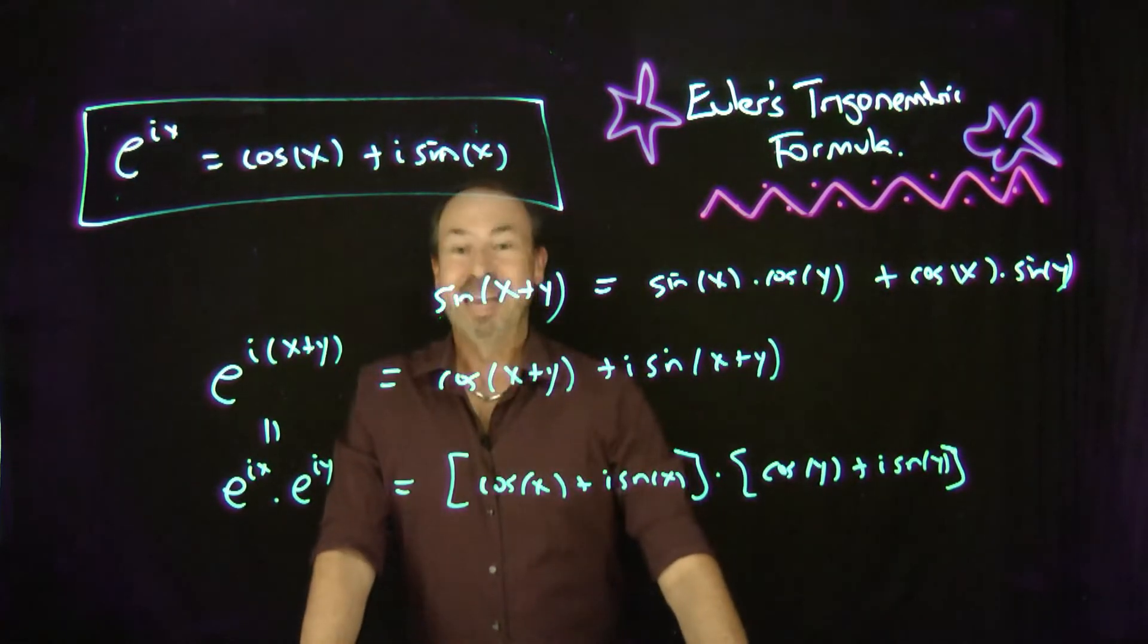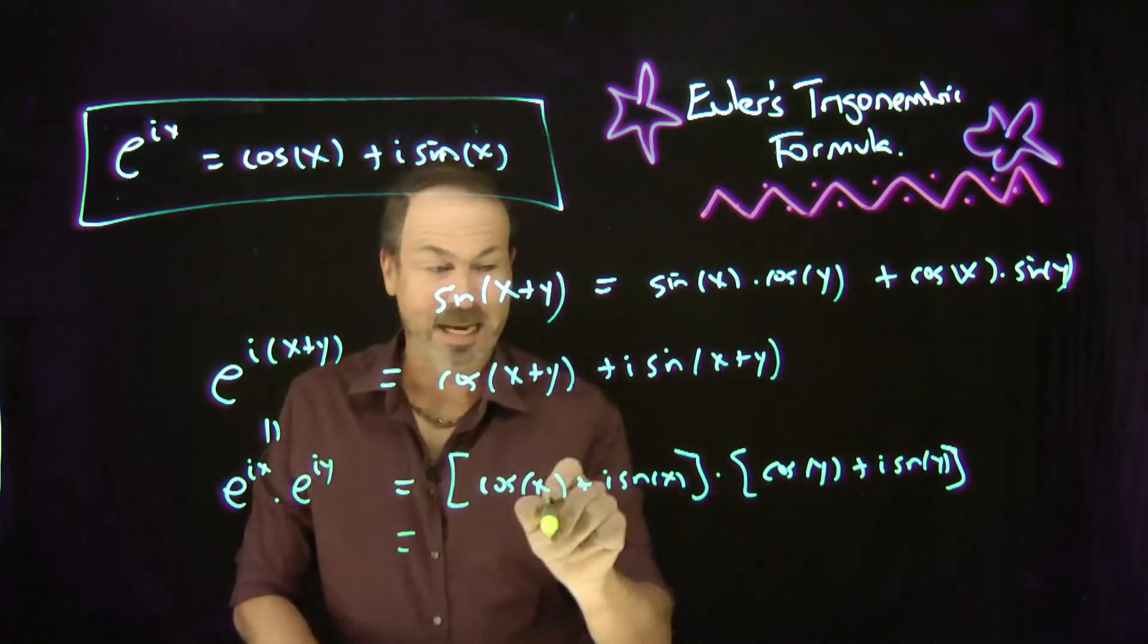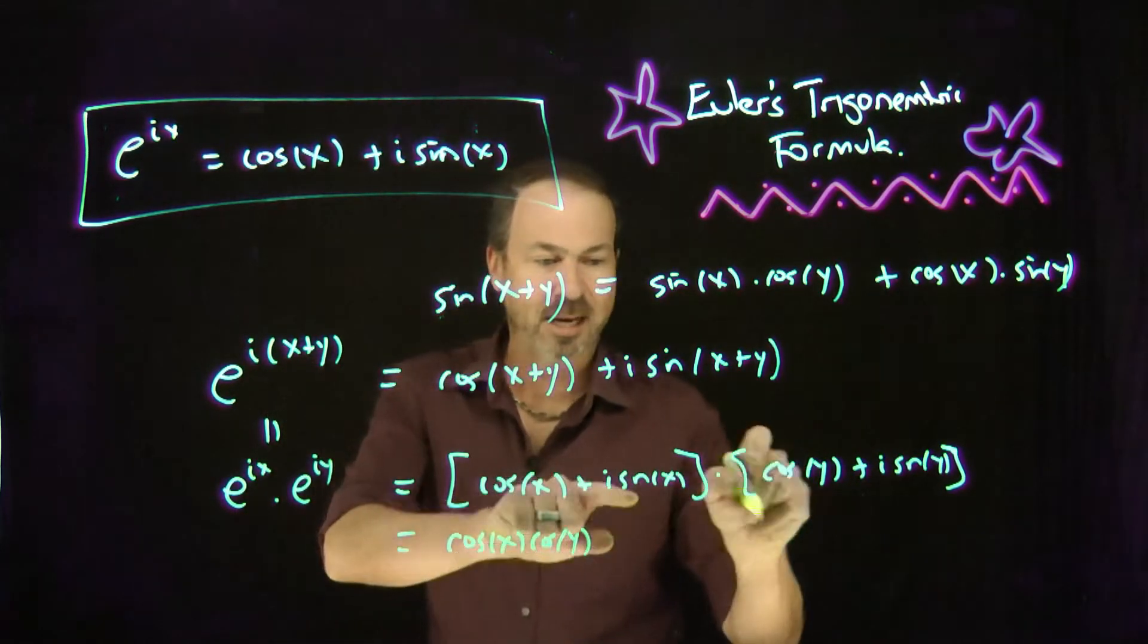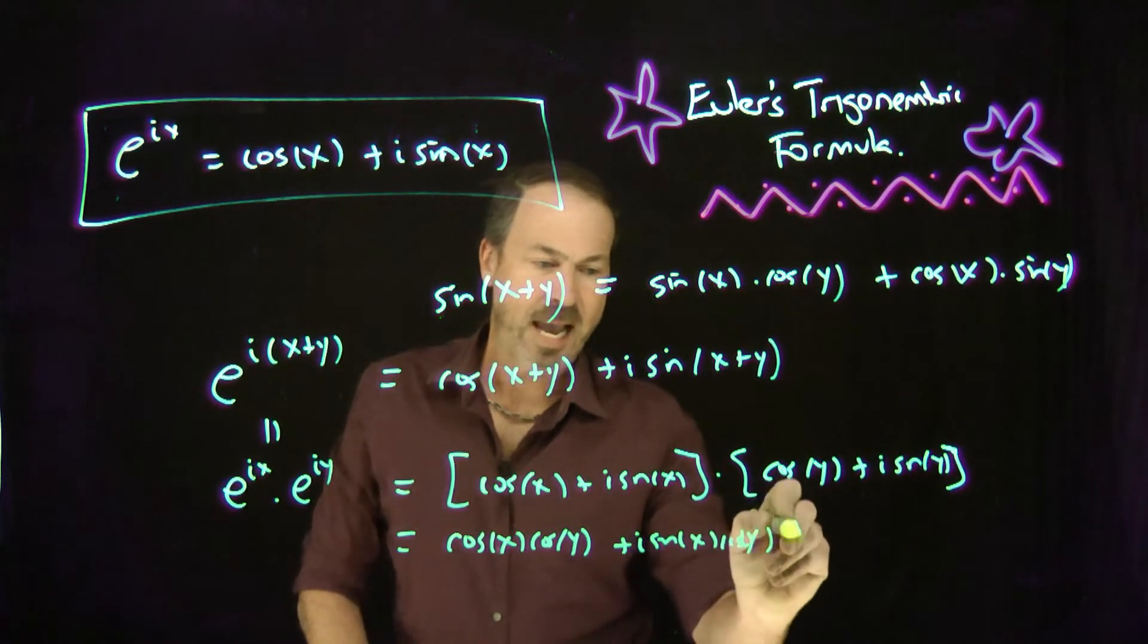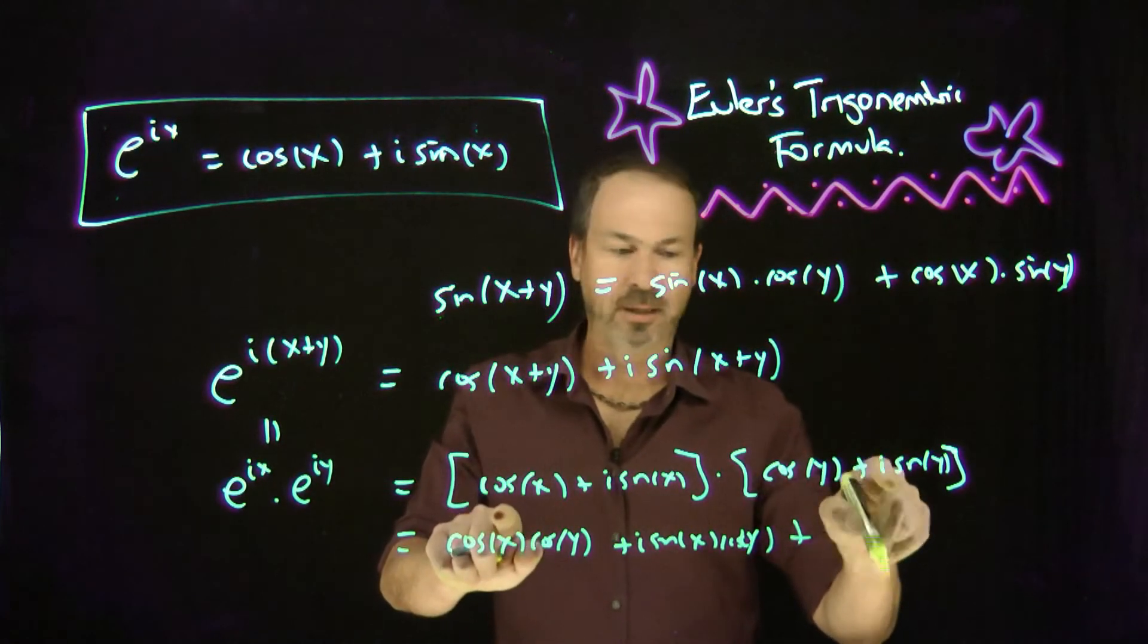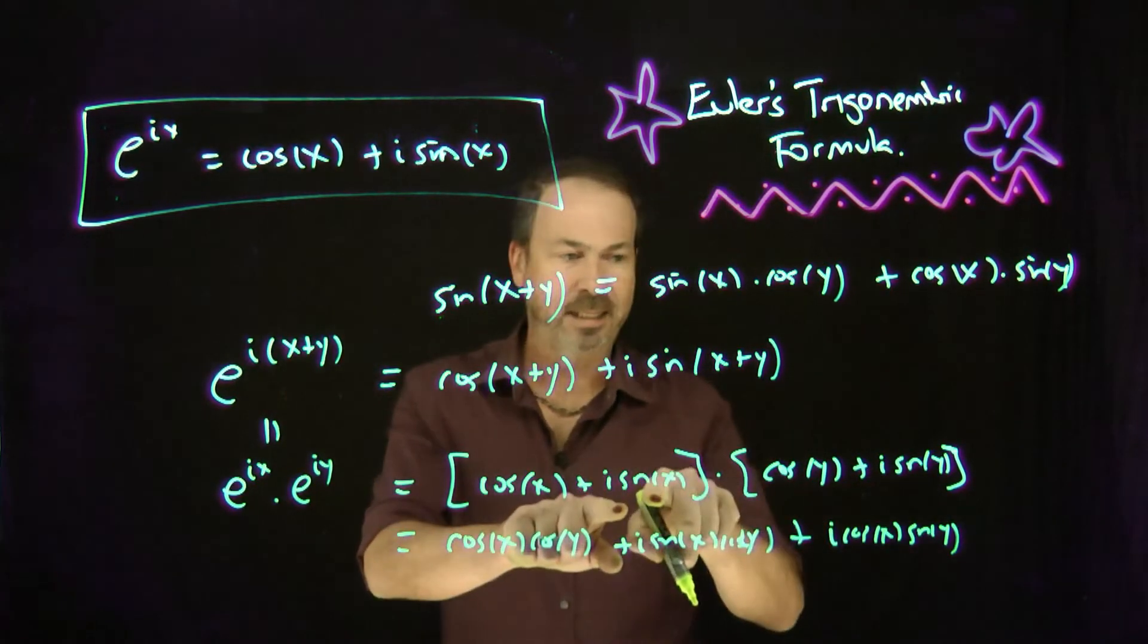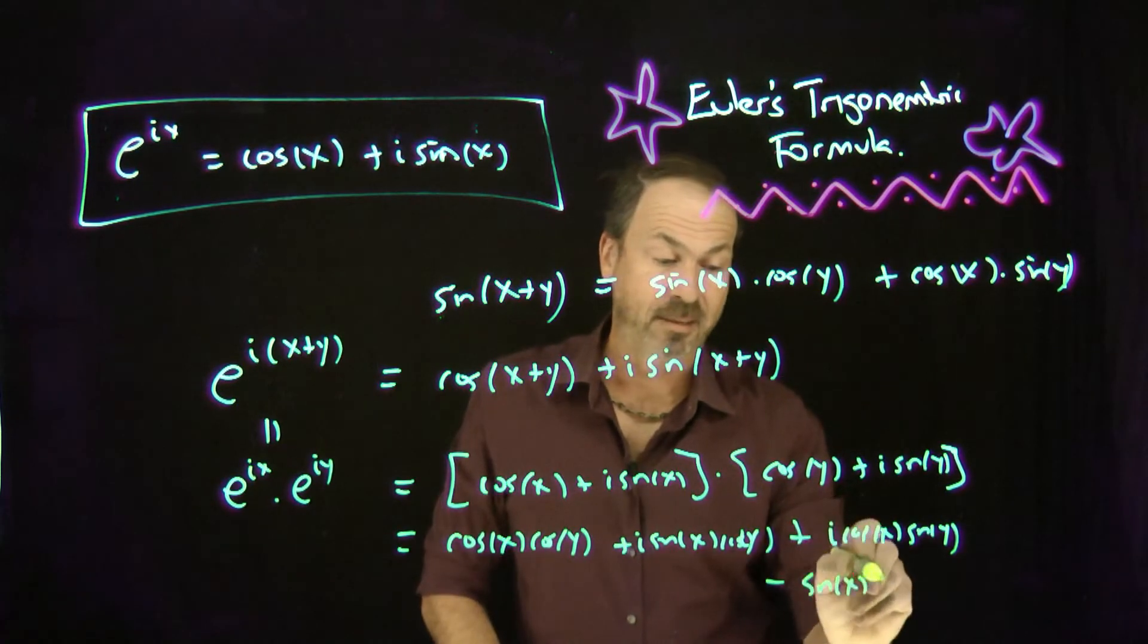And now it seems irresistible to actually expand those brackets. Let me do it. I get cos x cos y. And I get i sine x cos y. And I get i cos x sine y. And I get i sine x times i sine y. i squared is negative 1, so I get minus sine x sine y. Beautiful.